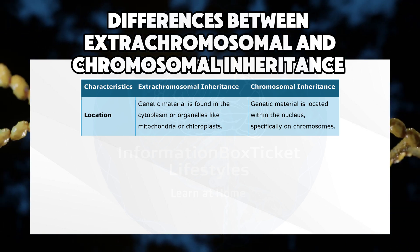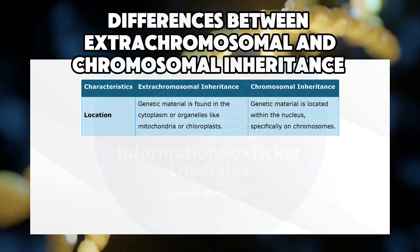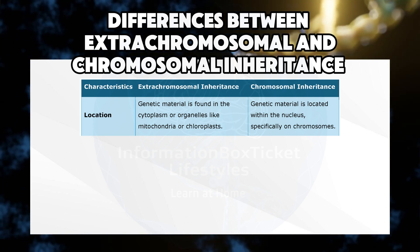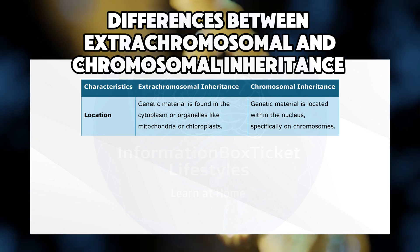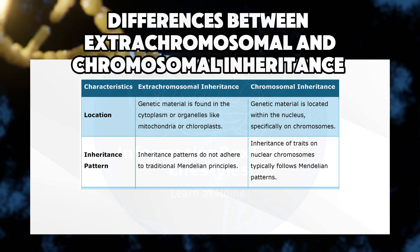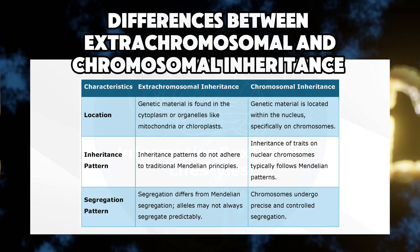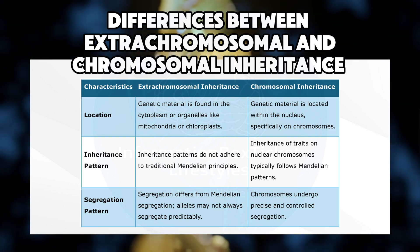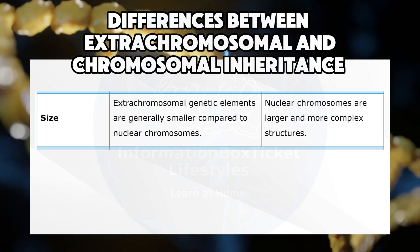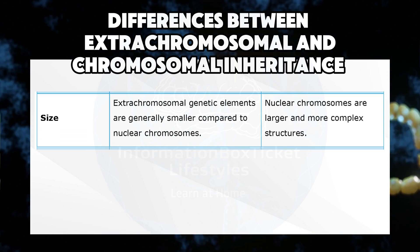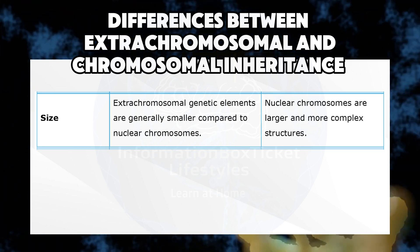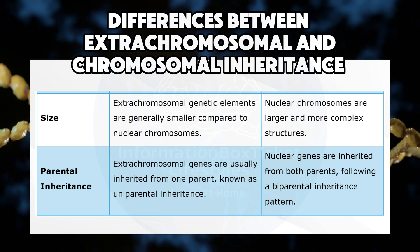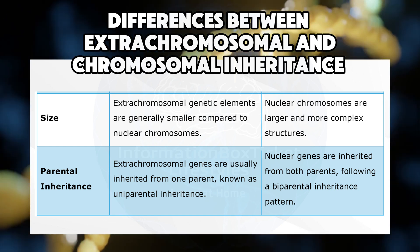Differences between Extra-chromosomal and Chromosomal Inheritance. Extra-chromosomal inheritance and chromosomal inheritance represent distinct modes of genetic transmission. Extra-chromosomal inheritance involves genetic material located outside the nucleus, typically in cytoplasmic organelles such as mitochondria or chloroplasts. Unlike chromosomal inheritance, which follows predictable Mendelian patterns of segregation, extra-chromosomal inheritance exhibits unique segregation patterns where alleles may not segregate in a Mendelian manner. These extra-chromosomal genetic elements are smaller compared to larger nuclear chromosomes. Additionally, extra-chromosomal genes often exhibit uniparental inheritance from a single parent, whereas nuclear genes follow a biparental inheritance pattern.